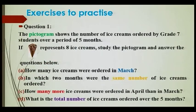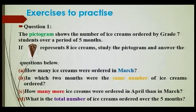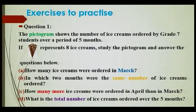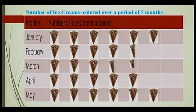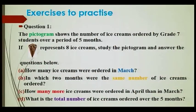Let us look at some exercises for you to practice. Question one: The pictogram shows the number of ice creams ordered by Grade 7 students over a period of five months. Here this picture represents eight ice creams. Study the pictogram and answer the questions below.